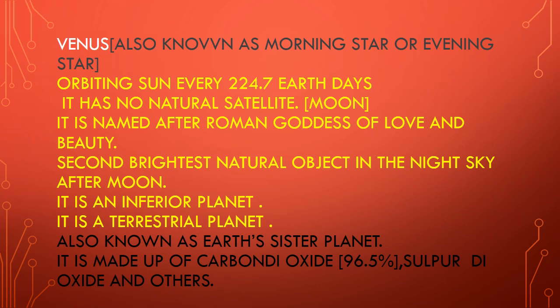Venus is named after the Roman goddess of love and beauty. It is the second brightest natural object in the night sky after the Moon. So the brightest is the Moon, and the second is Venus — this is a very important question. It is also an inferior planet, meaning it is close to the Sun. It is a terrestrial planet, also same as inferior — meaning close to the Sun.